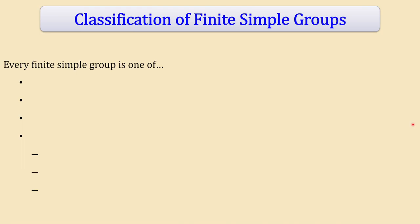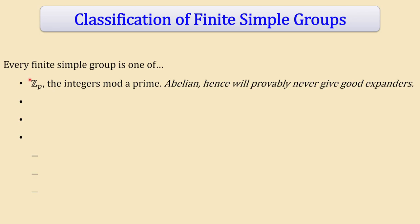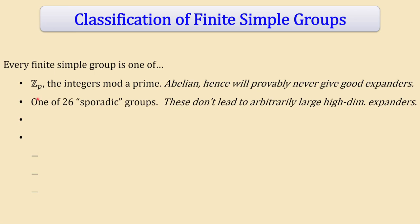Let me briefly explain the classification of finite simple groups. Every finite simple group is one of: the cyclic groups Z_p for prime p (abelian — you can't build good expanders from abelian groups); 26 sporadic groups (finite, so they don't give arbitrarily large families); the alternating groups (a very good open problem to build high-dimensional expanders from the symmetric group); or the groups of Lie type.